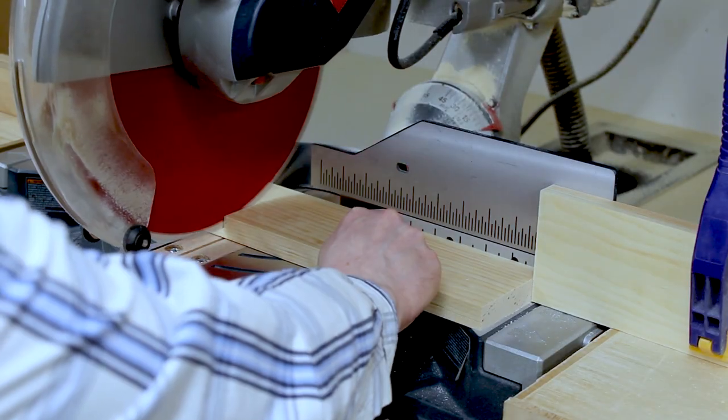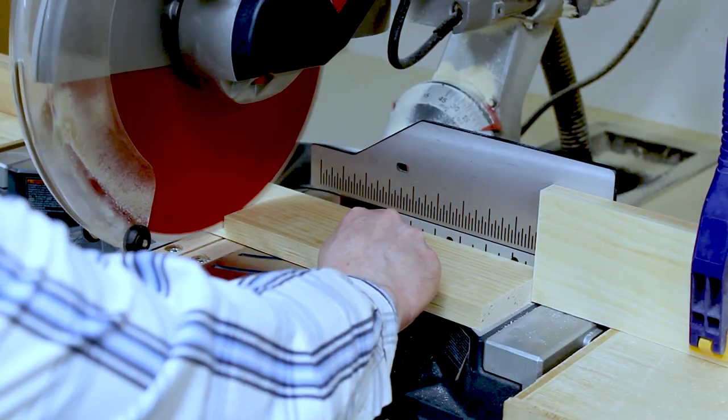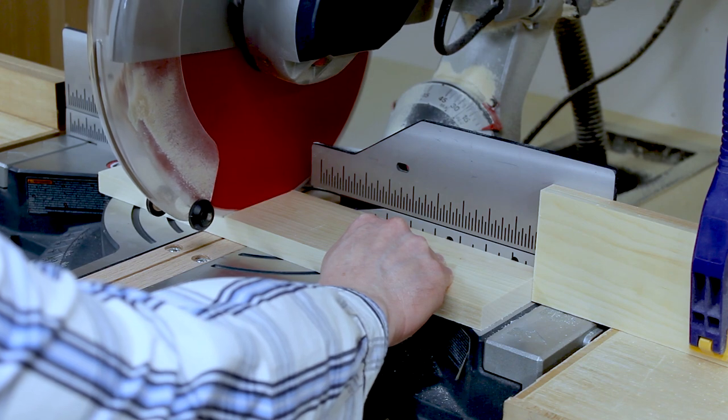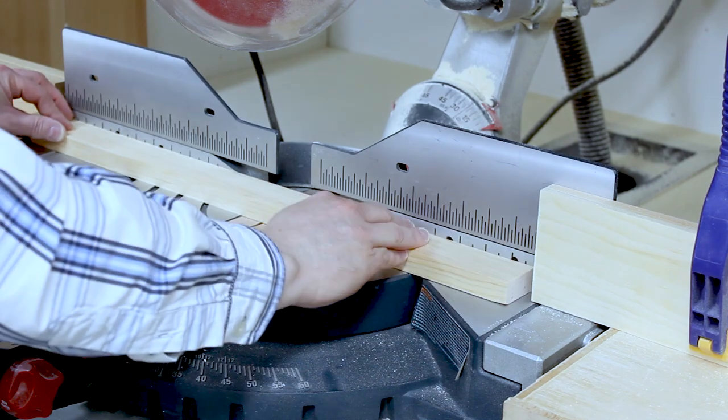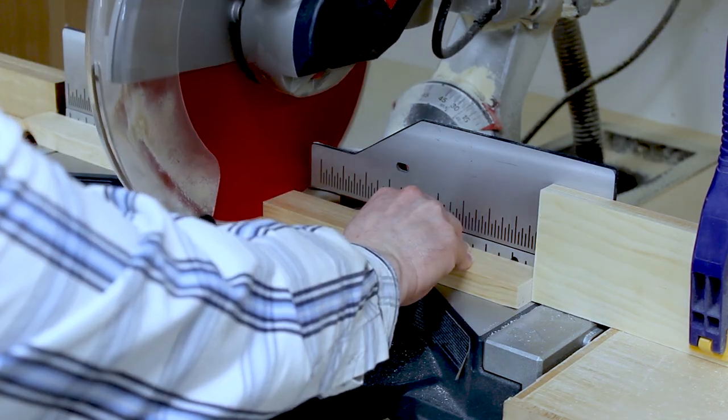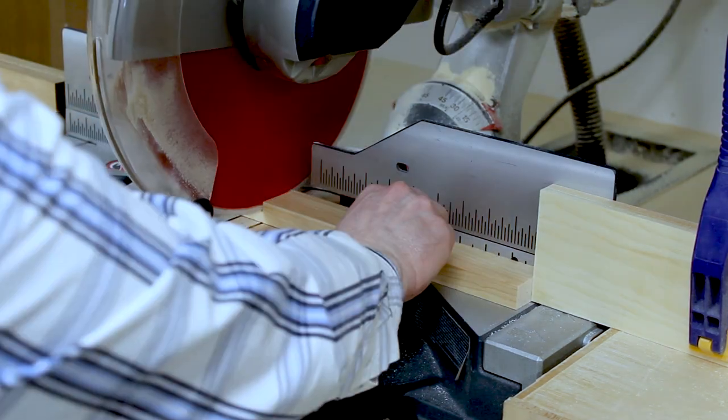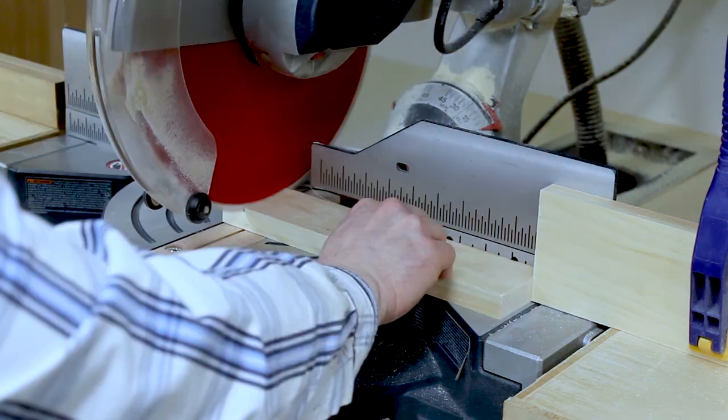Next I cut the hangers for the drill rack. All of these parts were cut to 10 and 7 sixteenths. First I cut 5 pieces of 1x4, 2 pieces of 1x2, and 3 pieces of 1x3.